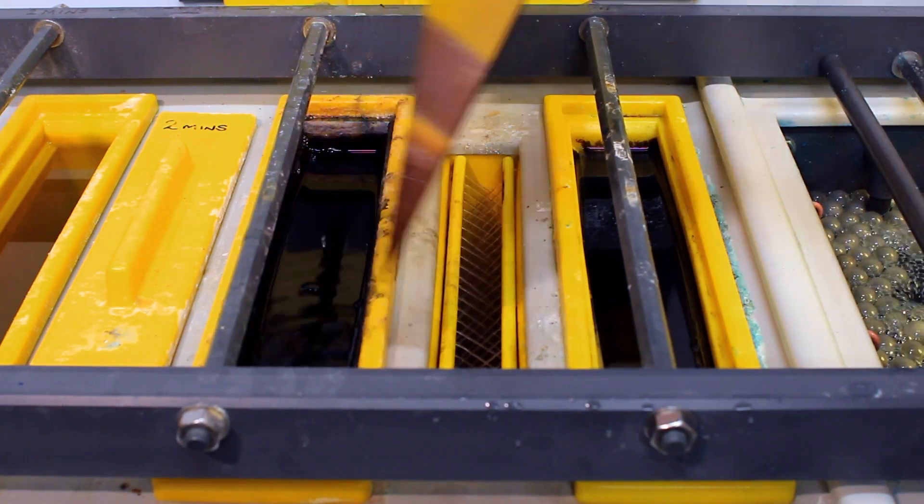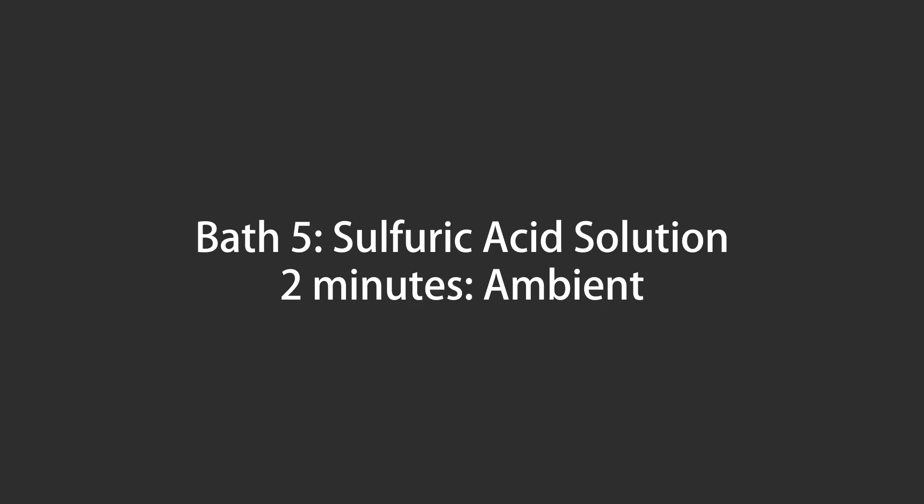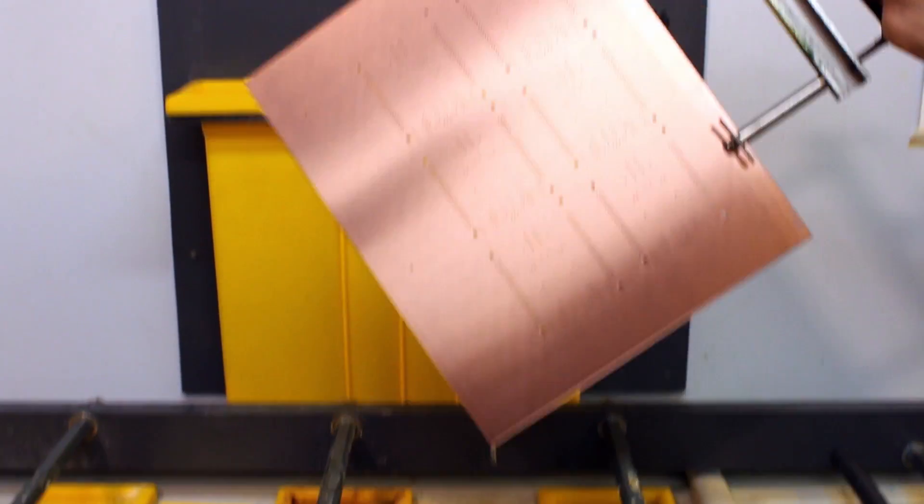The board is washed with water to prevent contamination of the next bath. The accelerator bath removes the tin from the colloid, leaving palladium behind. The board is then cleaned in an acid bath to remove any residue. The board is washed with water to prevent contamination of the next bath.